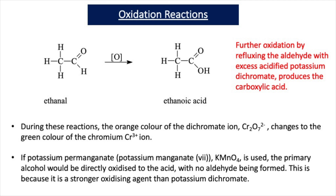Just like dichromate, whenever potassium permanganate oxidises a substance there is a colour change to indicate that oxidation has taken place. Acidified potassium permanganate goes from purple to colourless when it oxidises a substance.